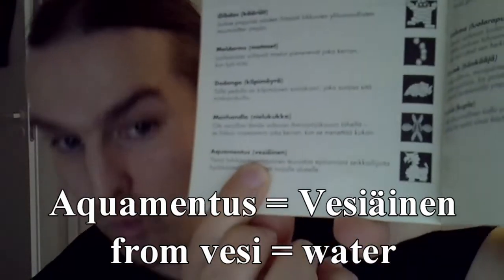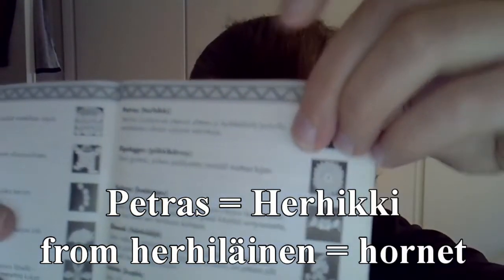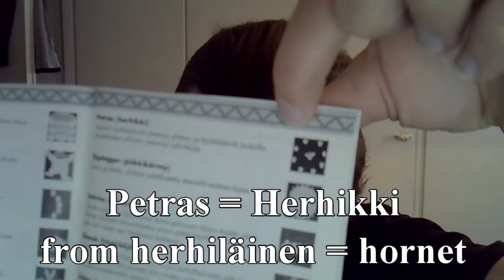Aquamentis I actually think is a kind of cool one — it's called vesijäinen, which means the watery one, but it has an old Finnish feel to it. It feels like the kind of thing you might hear in Kalevala or something like that. Patras is called herhikki, and I think that's a lead-on from the word herhiläinen, which means a hornet in Finnish.